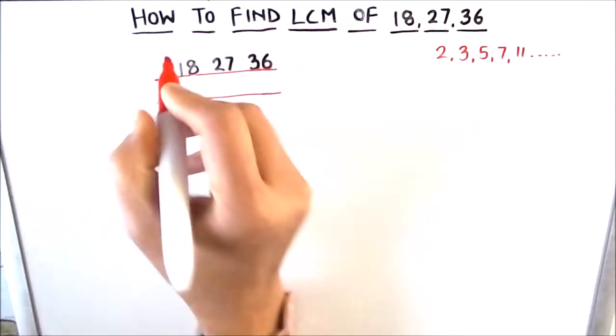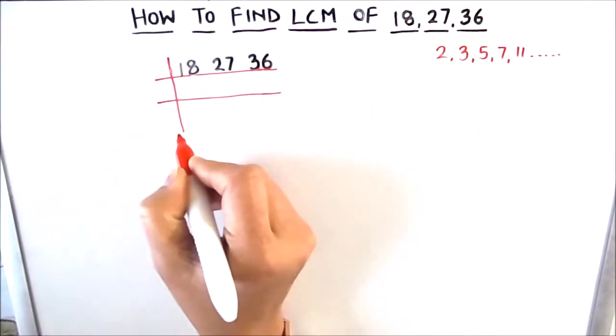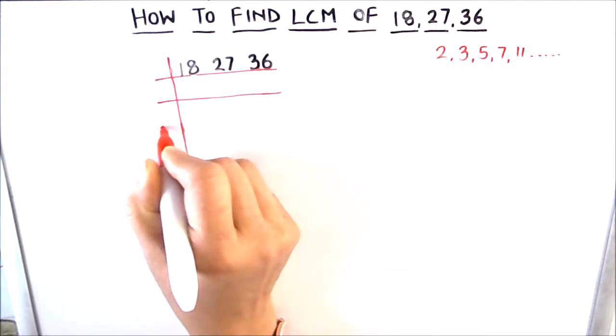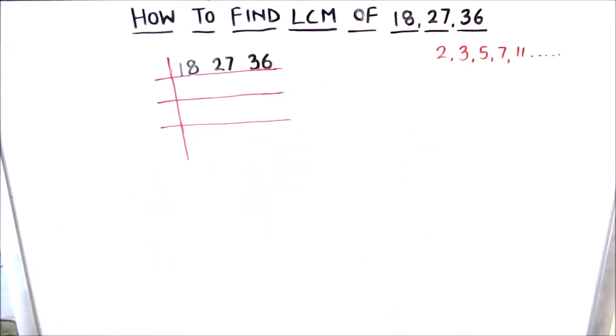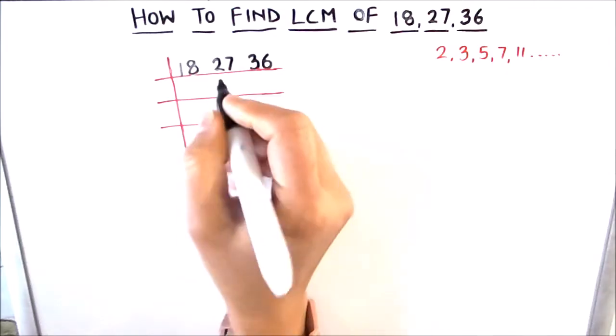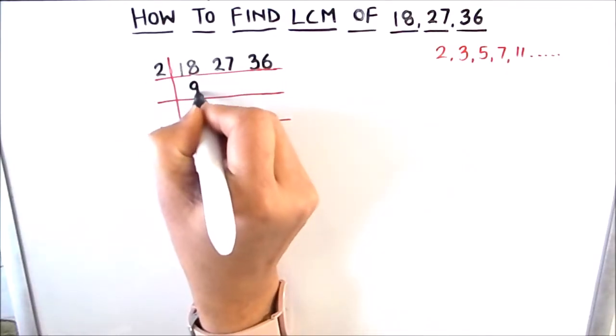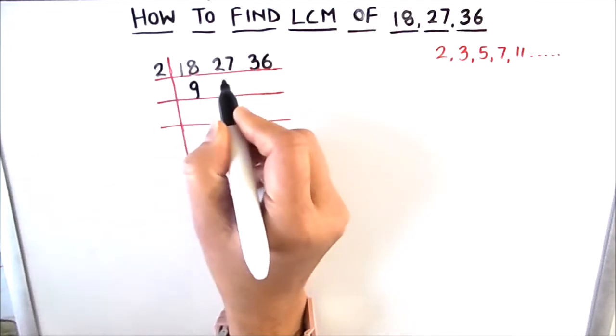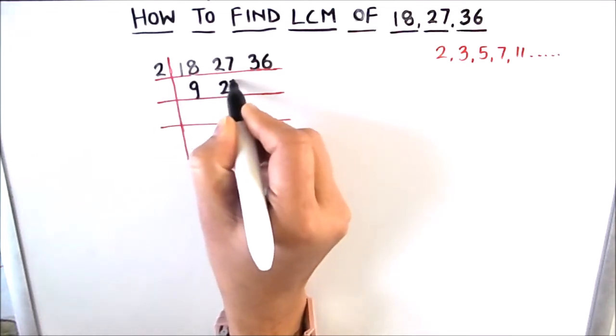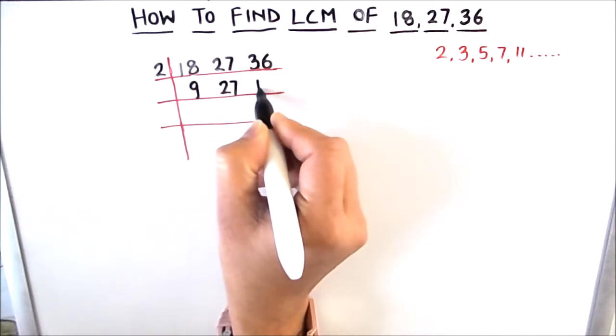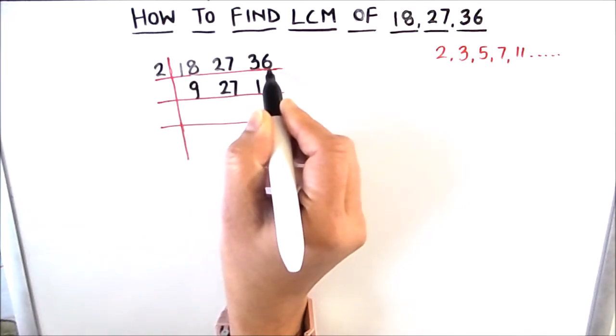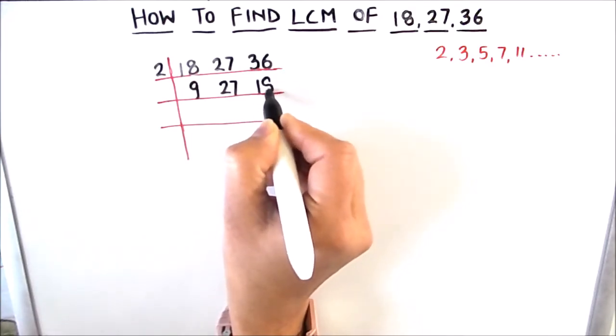So here we see that 18 and 36 are even numbers and 27 is an odd number. We will start by the first prime number 2 and we will divide 18 and 36. So 2 times 9 is 18. 27 is not fully divisible, so we will write it as is. And 36 divided by 2 gives us 18.